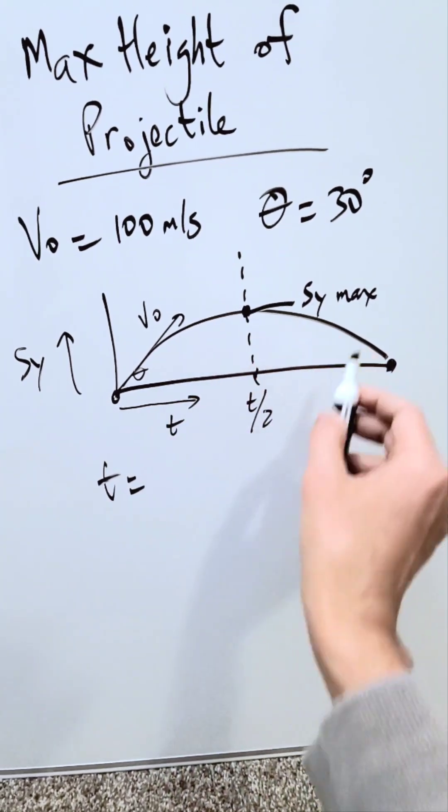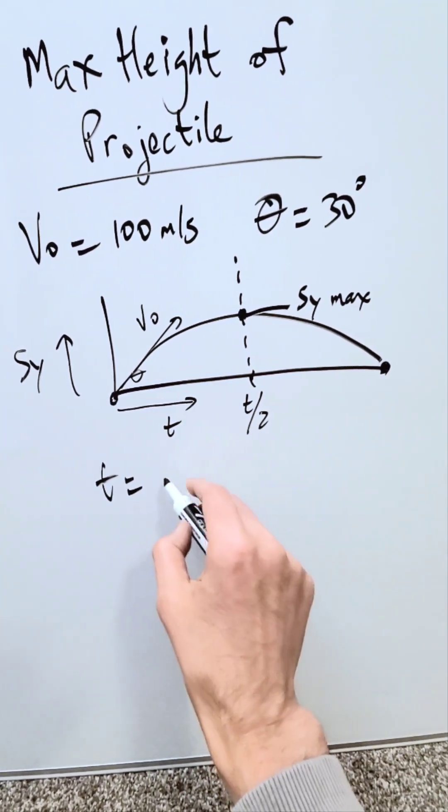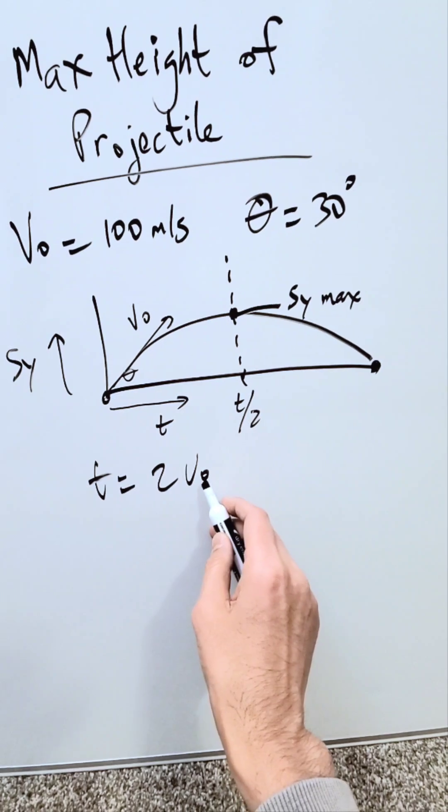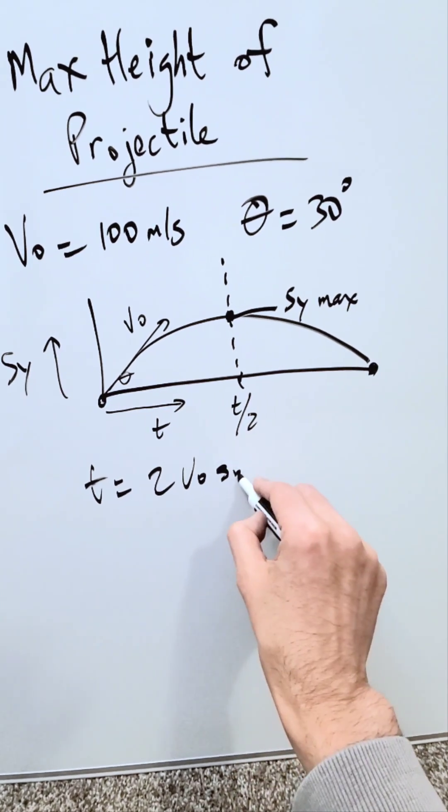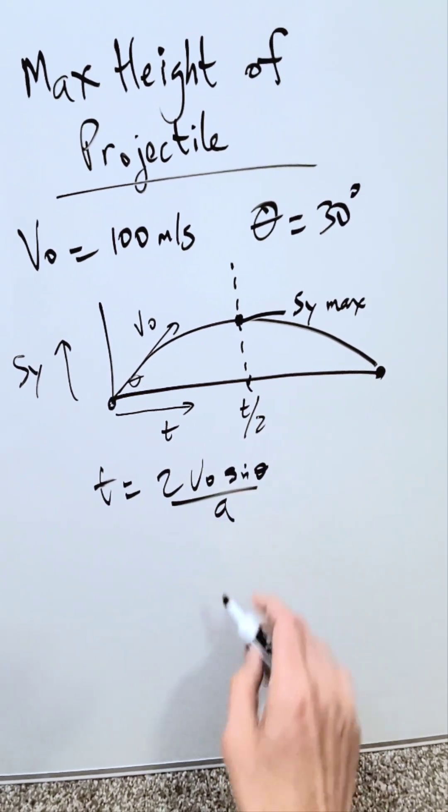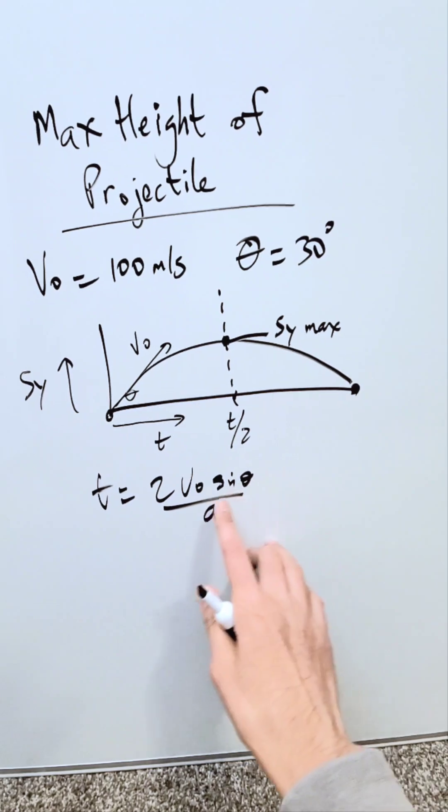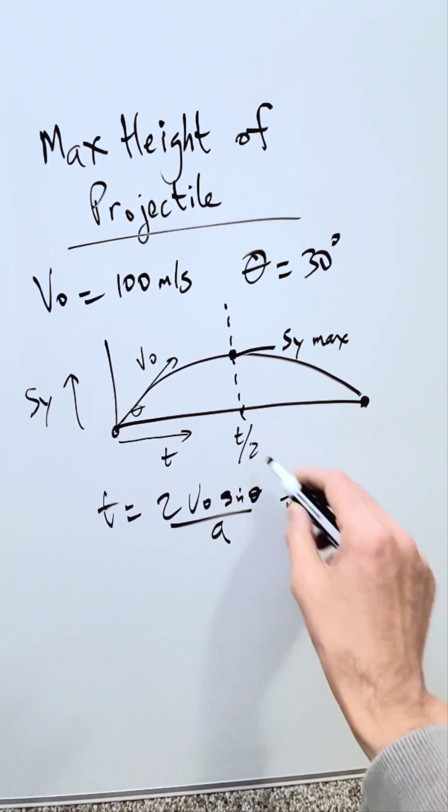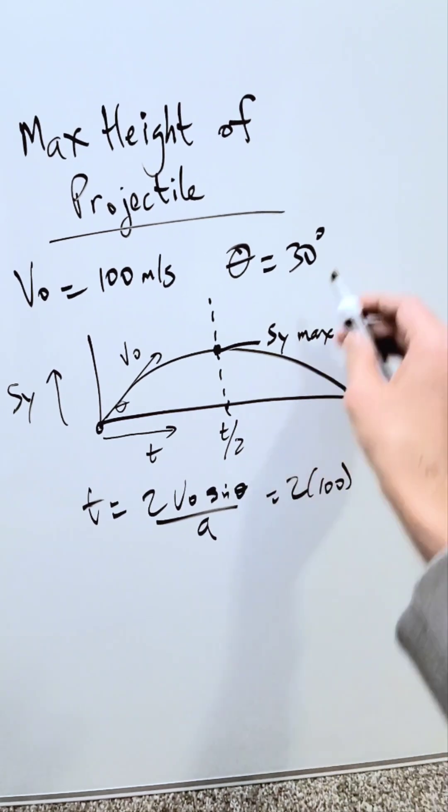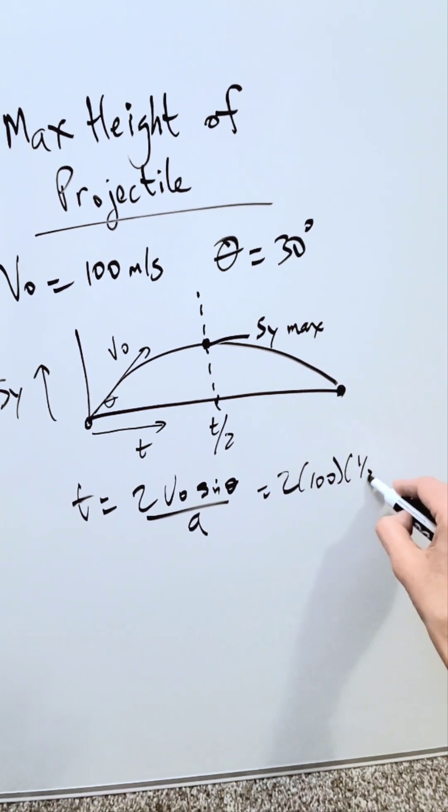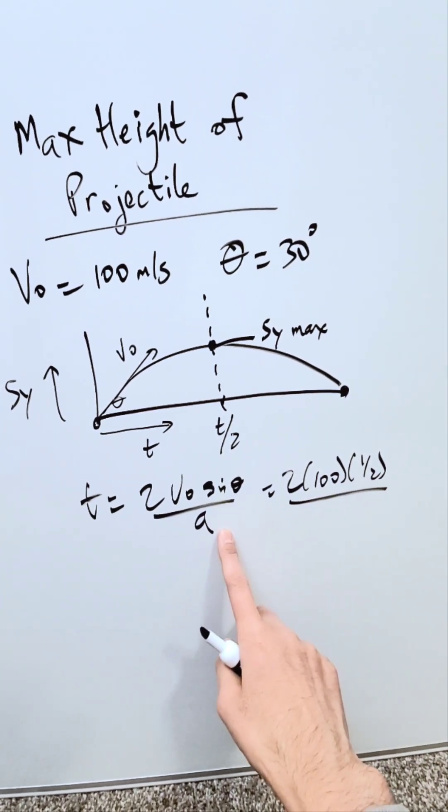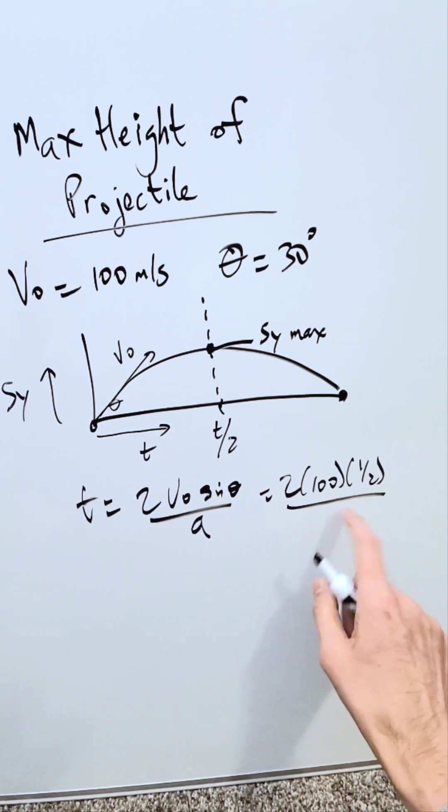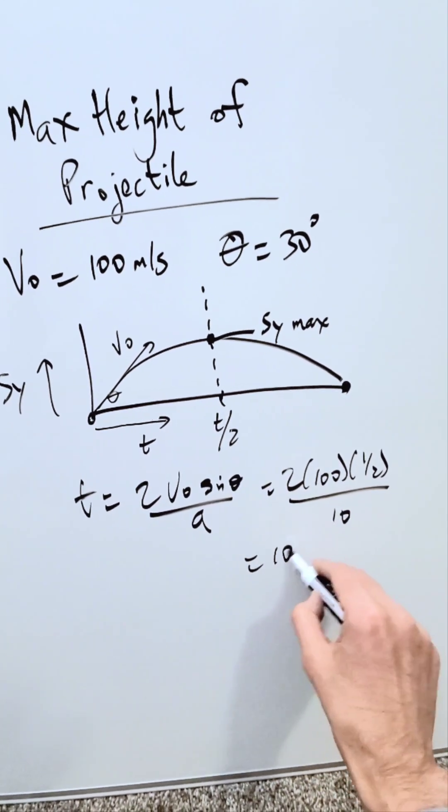You're looking here at an equation. The time of a projectile of this sort is going to be 2 times V₀, initial velocity, times sine of angle theta divided by acceleration. This will give you the total time of your projectile in flight. If you plug in your values, 2 times 100 times sine of 30, you know that to be 1 over 2. Here acceleration or gravity interchangeable, I'm just rounding it up to 10.